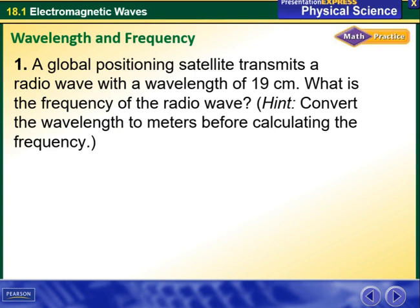Another example is right here. A global positioning satellite transmits a radio wave with a wavelength of 19 centimeters. What is the frequency of the radio wave? First, we have to convert the wavelength in centimeters into meters before calculating. We are going to talk about this more in detail and revise how to convert between distance units.